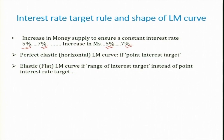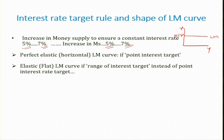In order to ensure that the rate of interest is constant, money supply will be adjusted accordingly. If policy makers clearly want a particular rate of interest, the LM curve is going to be horizontal. If they clearly want the rate of interest fixed at a rate — for example, 5 percent — then the LM curve is going to be a perfectly elastic curve.